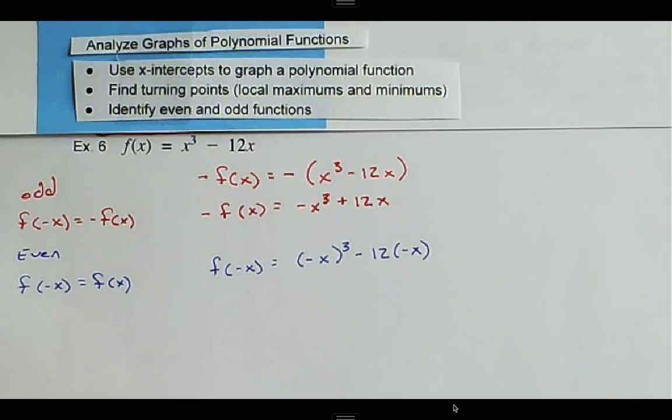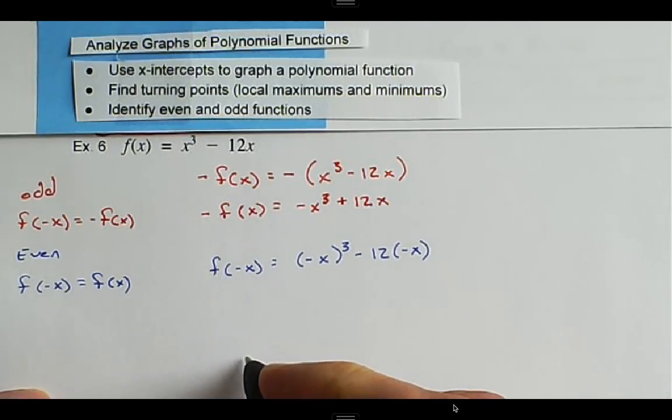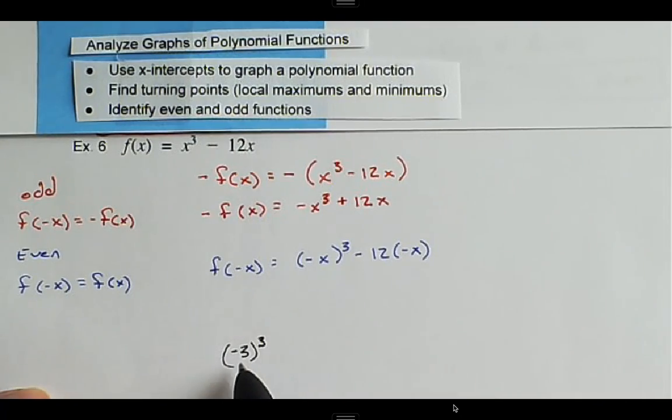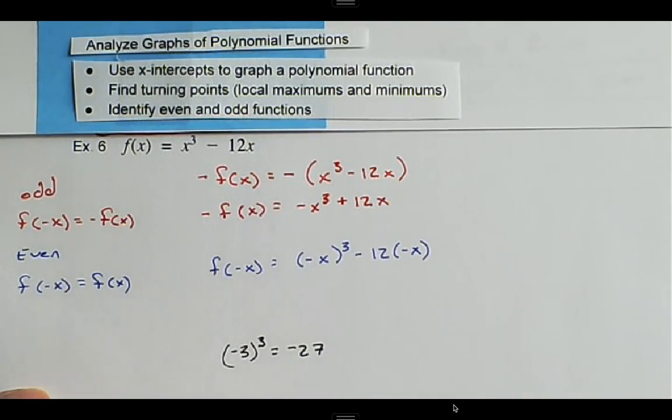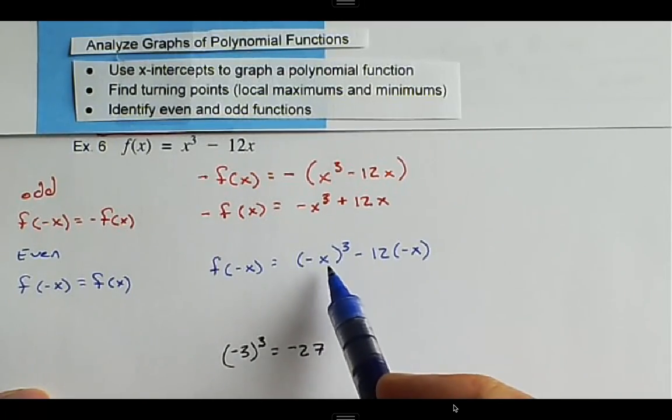The example that we work with is if we have -3 raised to the third power, -3 times -3 is 9, and then multiplied by -3 again, and that becomes -27. So we're going to keep the negative sign with our exponent here.